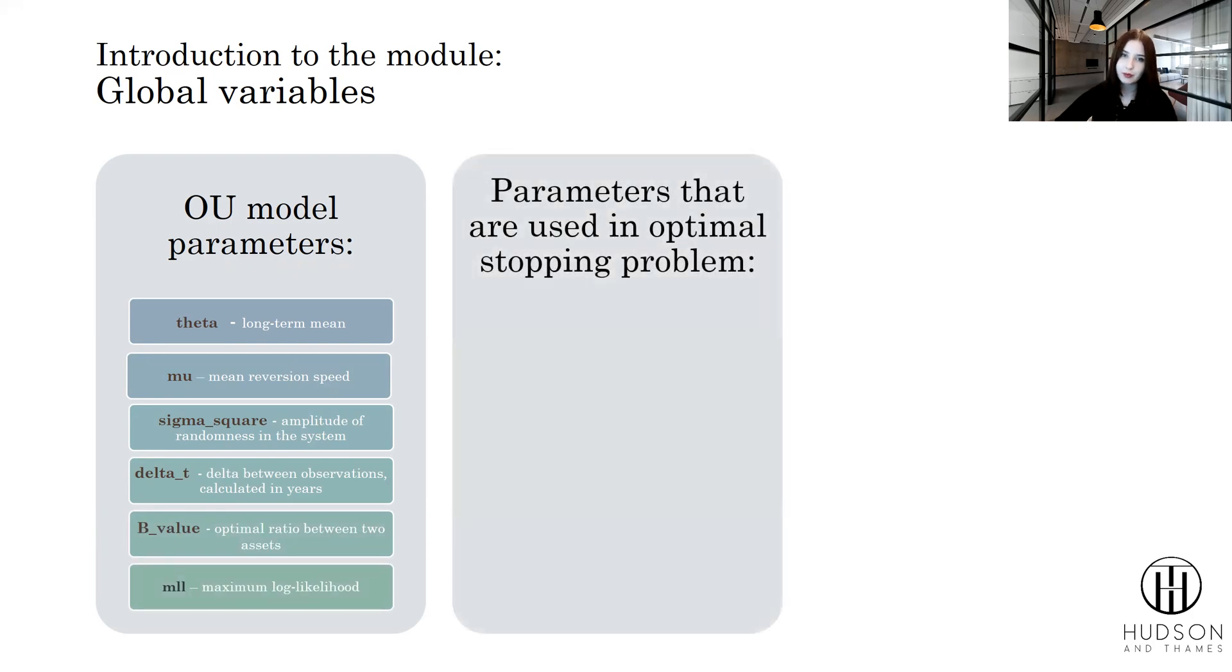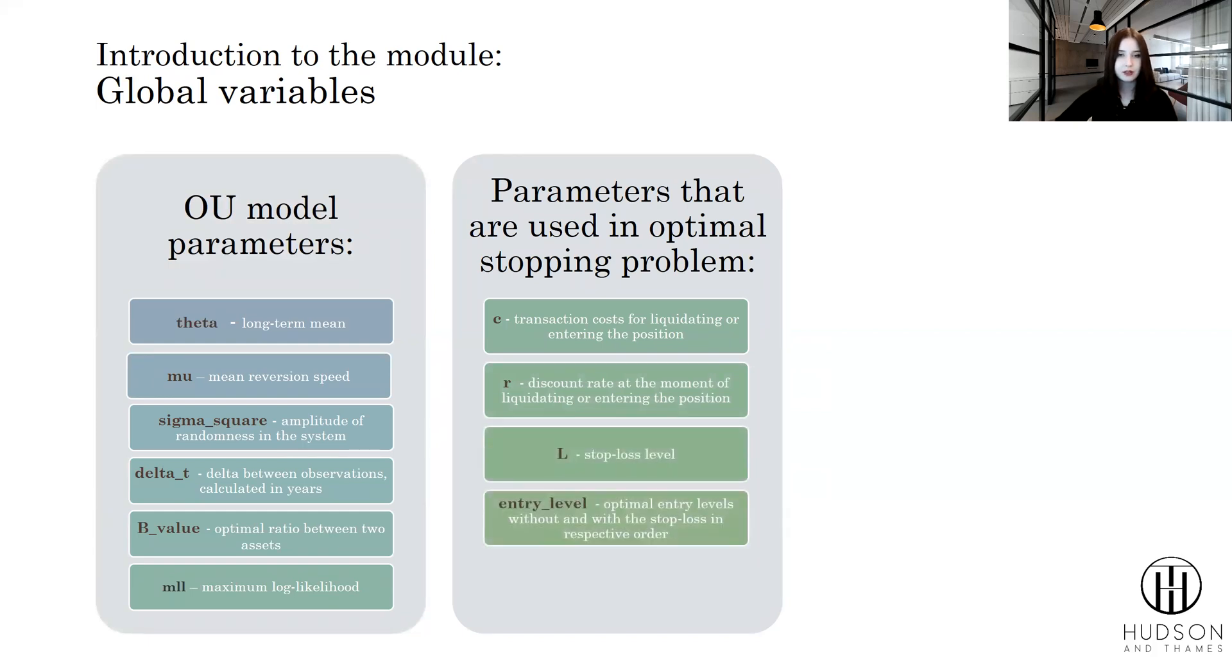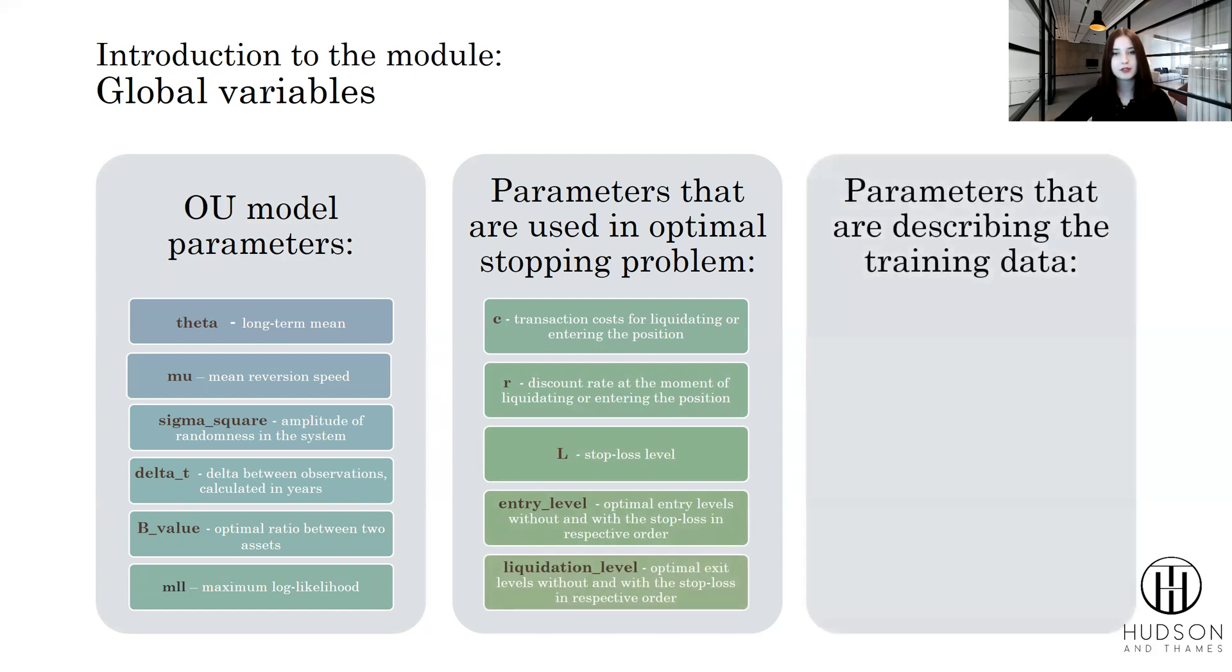Then go parameters used in optimal stopping problems: transaction costs, discount rates, stop-loss level, entry levels, and liquidation levels. The last part would be parameters describing the training data: the data itself provided by the user, and the specified training period used for current training of the module.